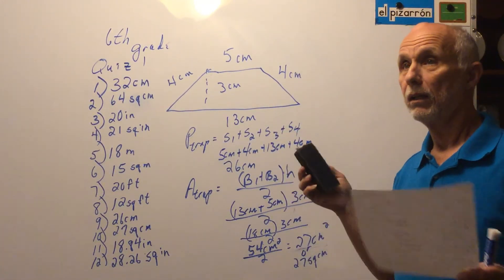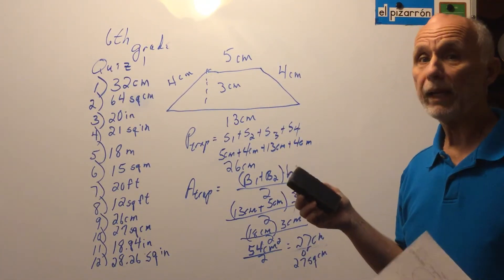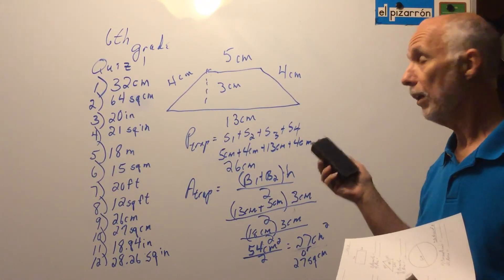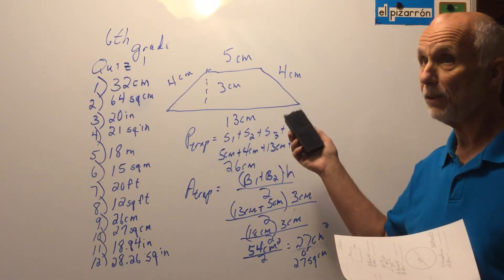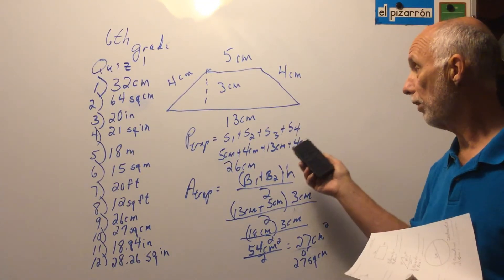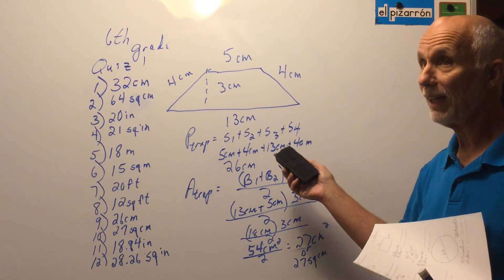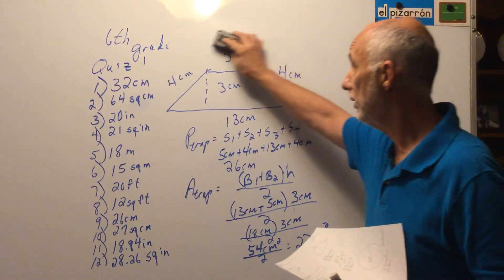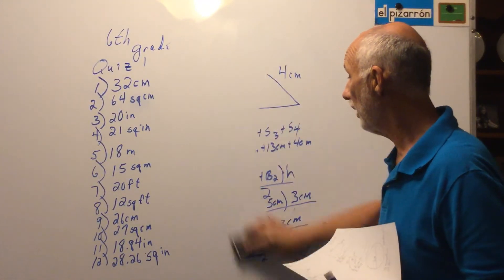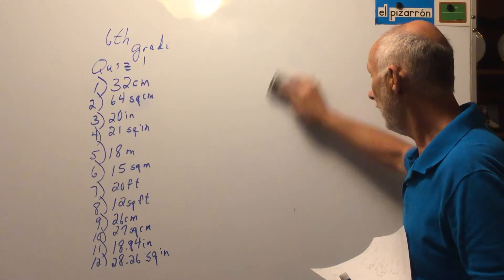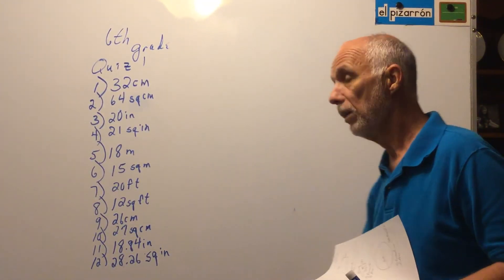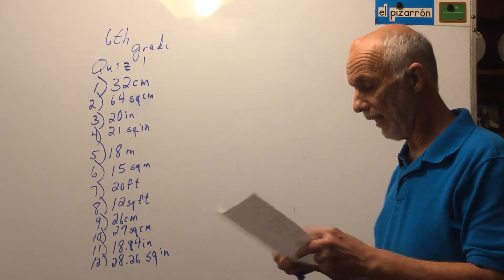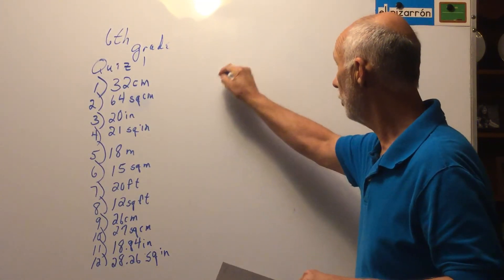When you come back to school, if you don't write the formula first, replace the variables with their values second, and then get the answer, you're going to get points taken off. I've seen people get every single answer right and fail because they didn't write the formula. The last figure was a circle.